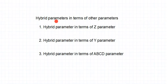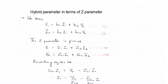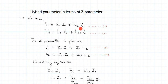Today's lecture is on hybrid parameters in terms of other parameters. We will look at the first conversion: hybrid parameters in terms of Z parameters. As discussed in previous lectures, whenever we start with a conversion we are expected to write the equations of those parameters. Hybrid parameters relate V1 and I2 with I1 and V2, whereas Z parameters relate V1 and V2 with I1 and I2 of the two-port network.